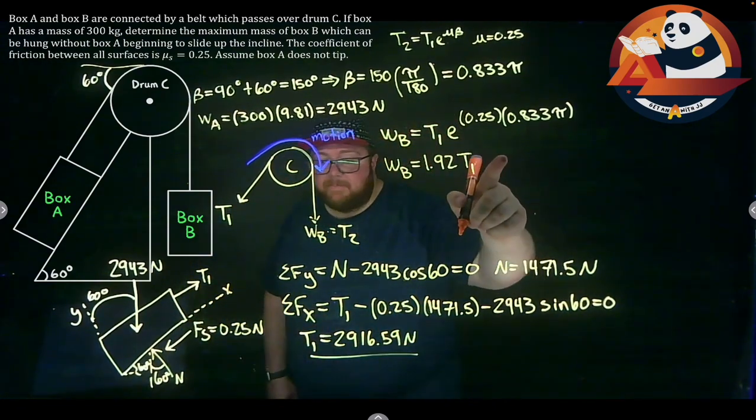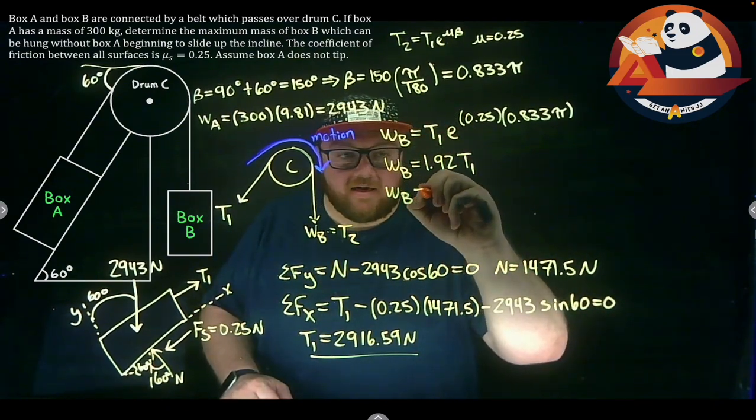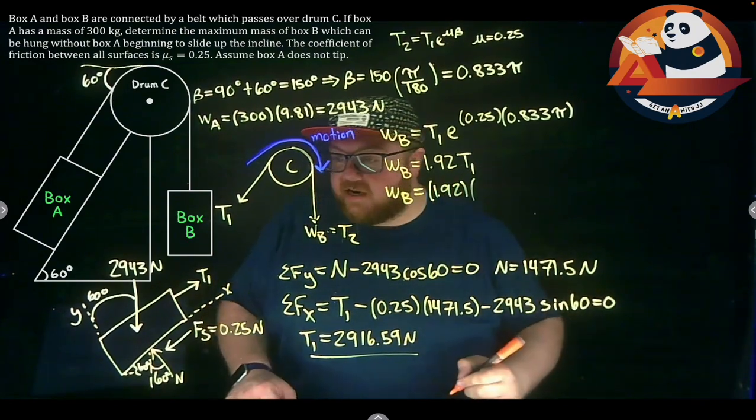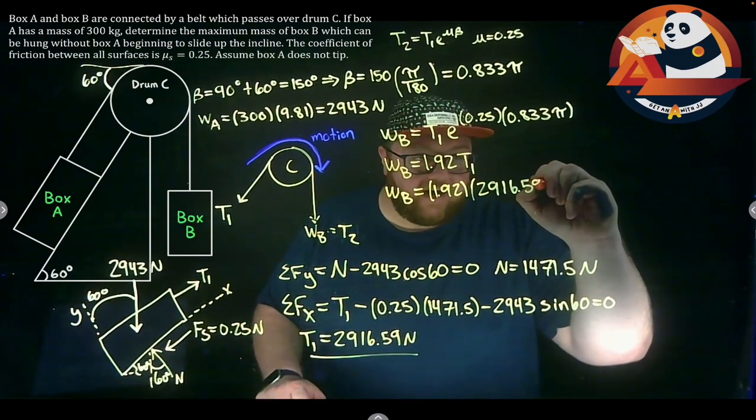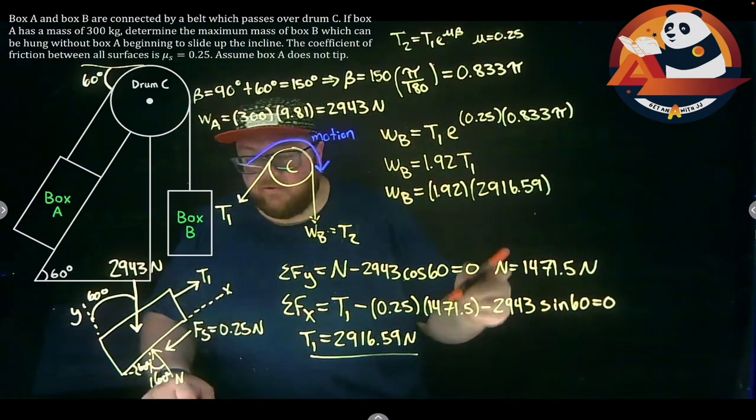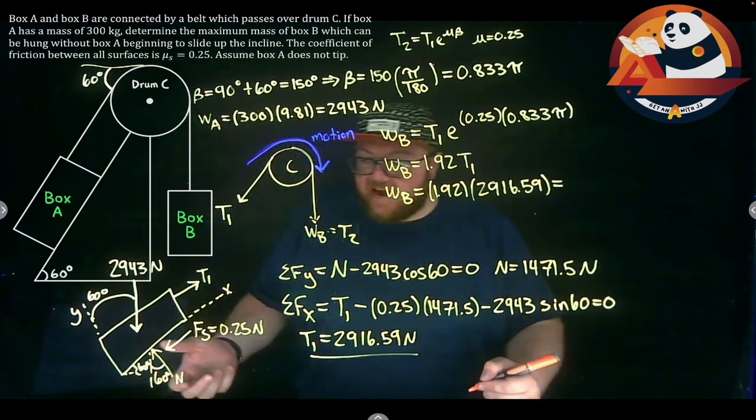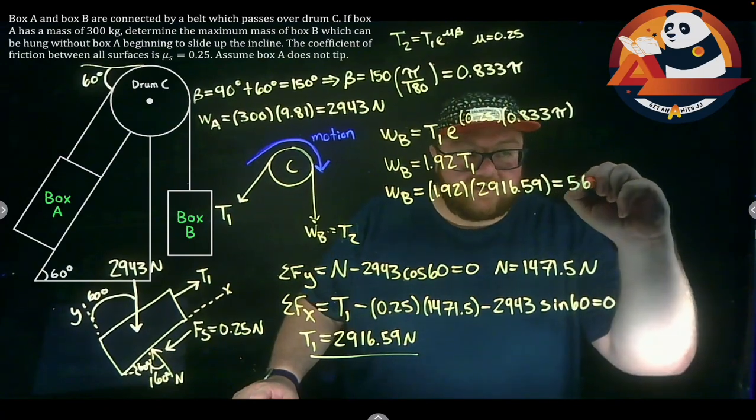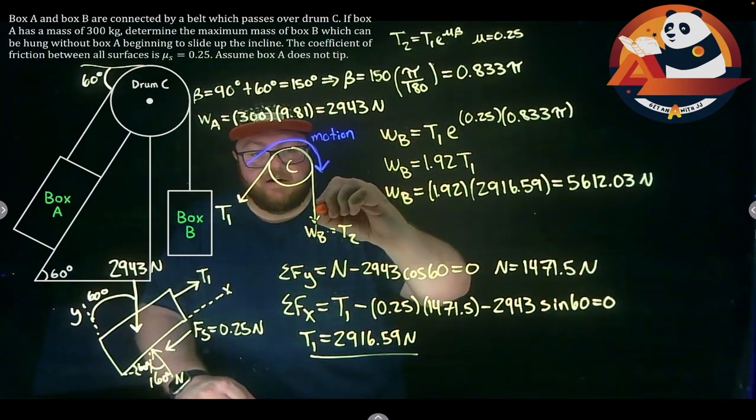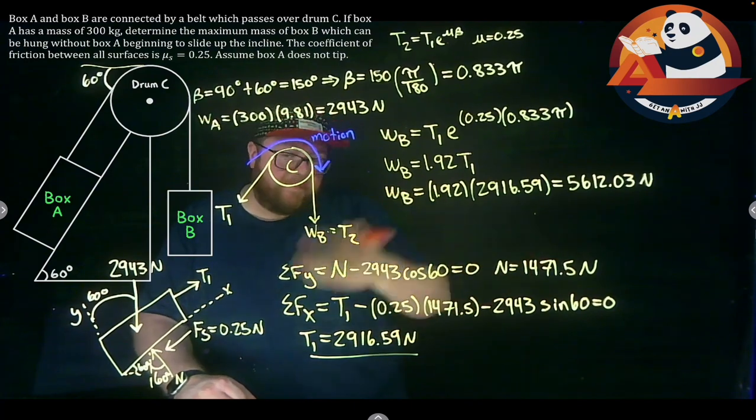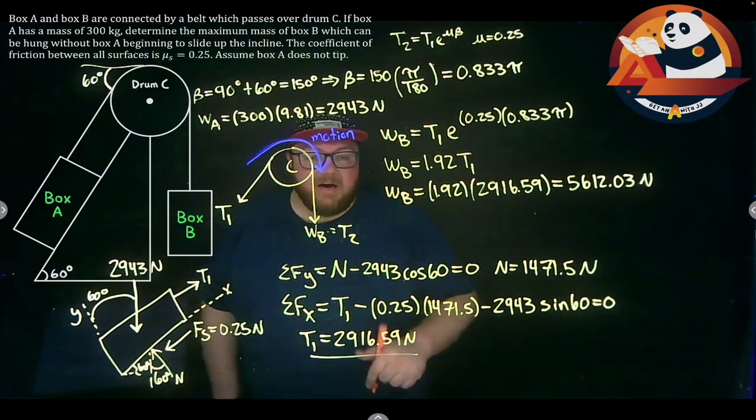Again, not an answer, but I can use that and come back up here now. So with T1 known, let's come back up and get to my weight of B is 1.92 times T1, 2916.59. With that one known, I can get that my weight, that maximum weight of our box is going to be 5612.03 newtons. Anything less than this and that box is not going to start moving up that incline. Anything more, I'm just going to move up it faster, we'll get bigger acceleration coming in. But that becomes a dynamics problem, not a statics problem, so we don't worry about that here.